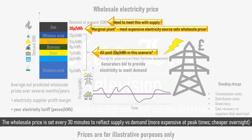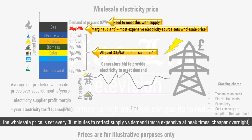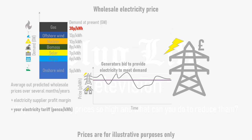Since wholesale electricity prices are so high, the price at which electricity providers can sell you electricity has also had to increase to stop them all from going out of business. Wholesale prices are so high at the moment that something interesting is happening with some forms of electricity generation that were previously deemed expensive.